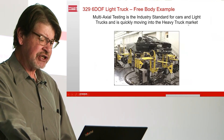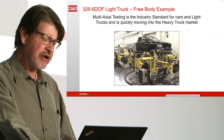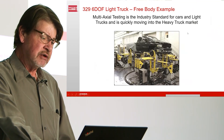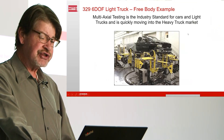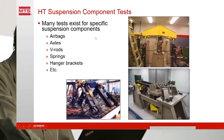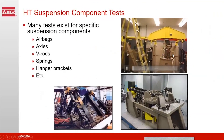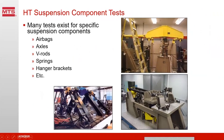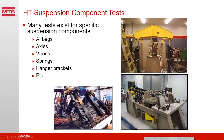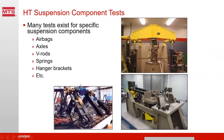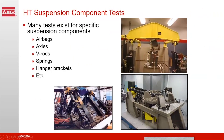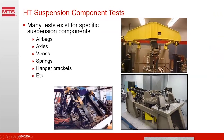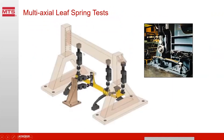This is an example of a 24-channel light truck test — we can do the same thing with a heavy truck. We can do component tests: here you see a six degree of freedom airbag test, a five degree of freedom V-Rod test for testing the elastomer system, and an axle bending test ranging from two-axis up to six-axis depending on requirements. There are lots of different specific tests for components.